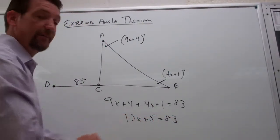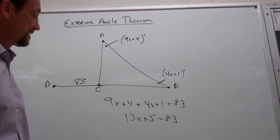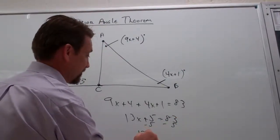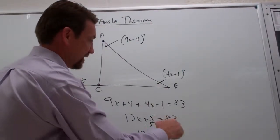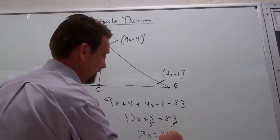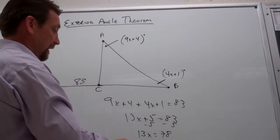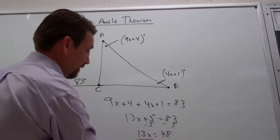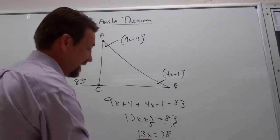Now this is a two step equation. We want to get the x by itself. So we're going to first subtract 5 from both sides. Give us 13x equals 83 minus 5 is 78. And then we divide both sides by 13. And we get x equals 6.